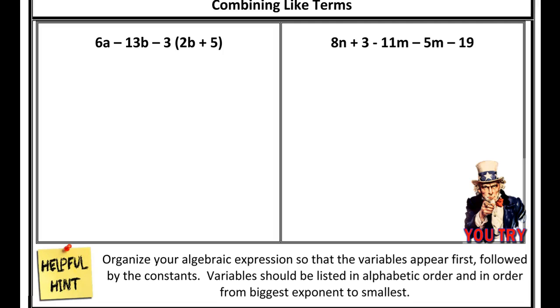That means fewer calculations, and from a probability standpoint, that means you'll be making fewer errors. Let's look at this algebraic expression to the left: 6a minus 13b minus 3 times the quantity 2b plus 5.